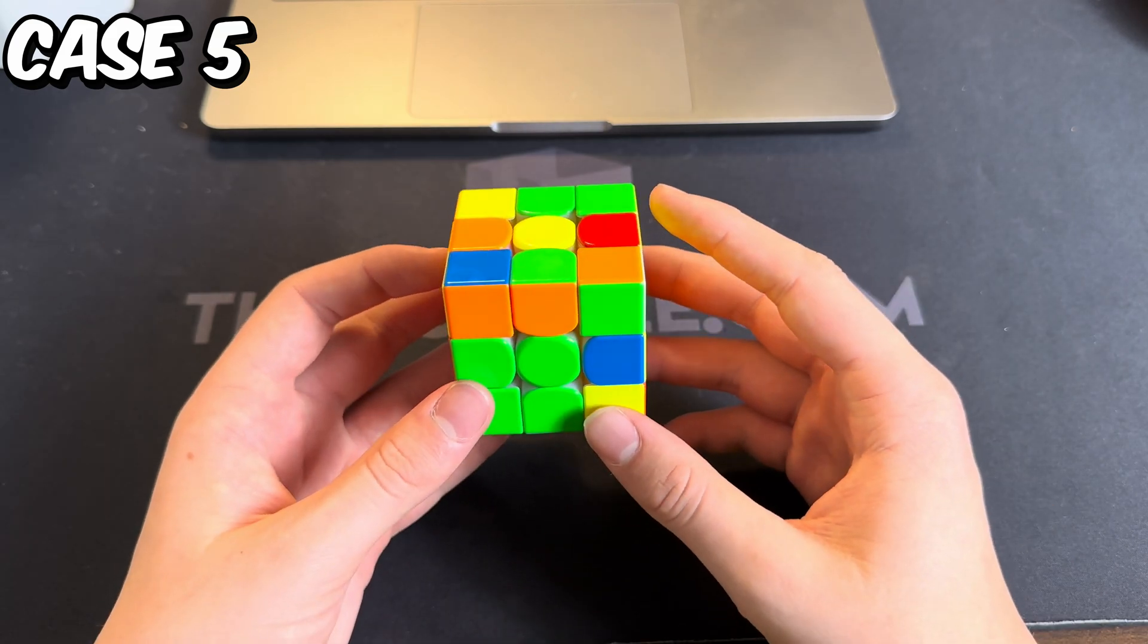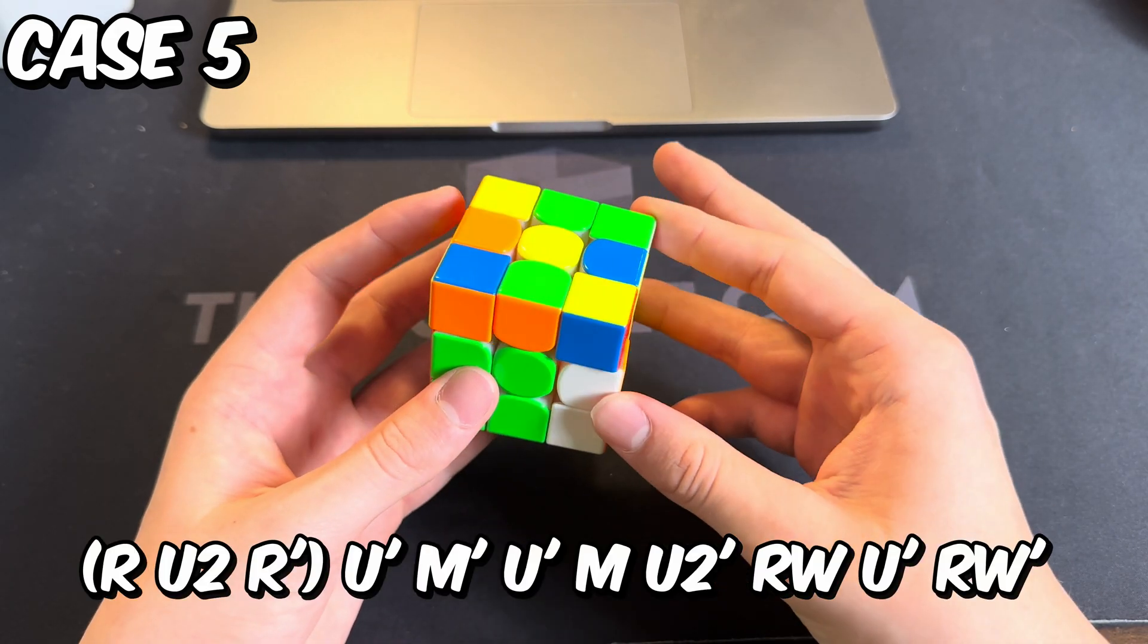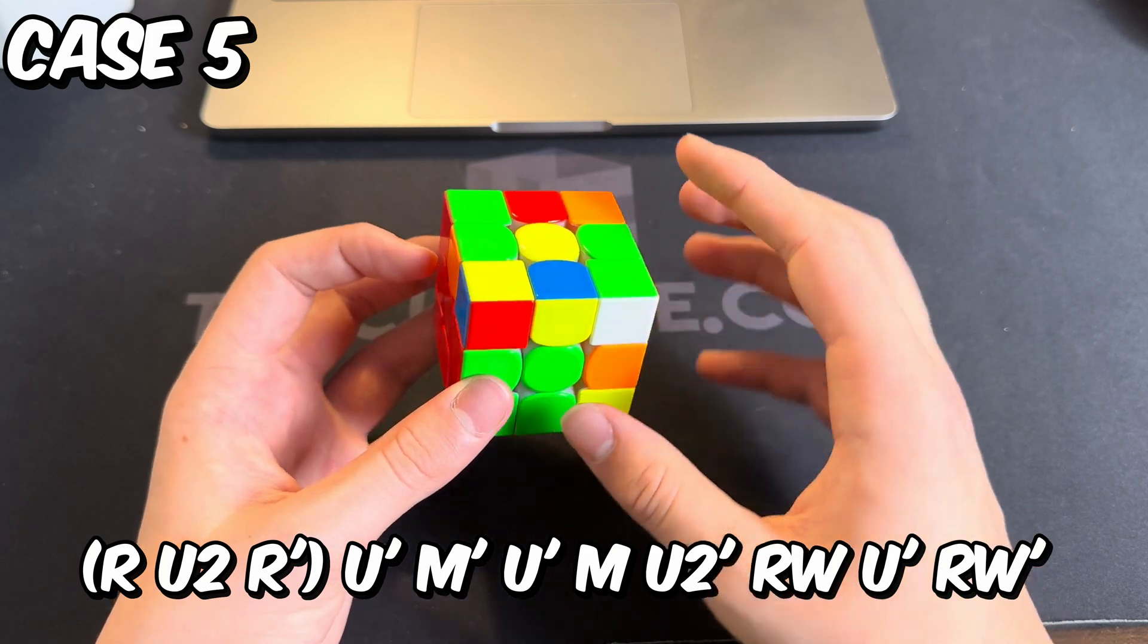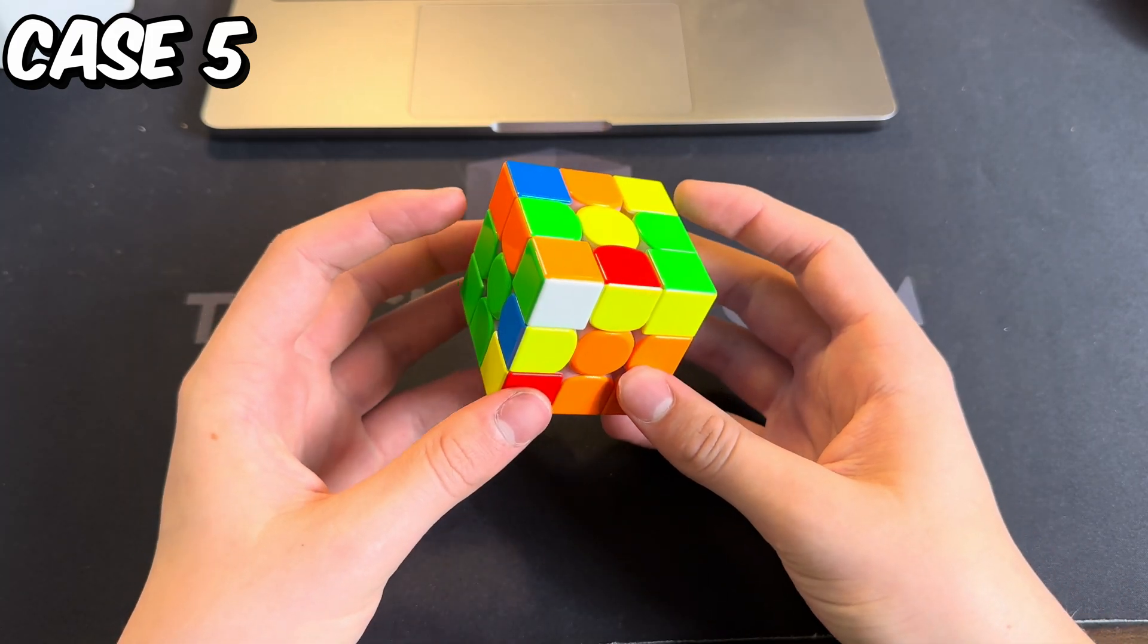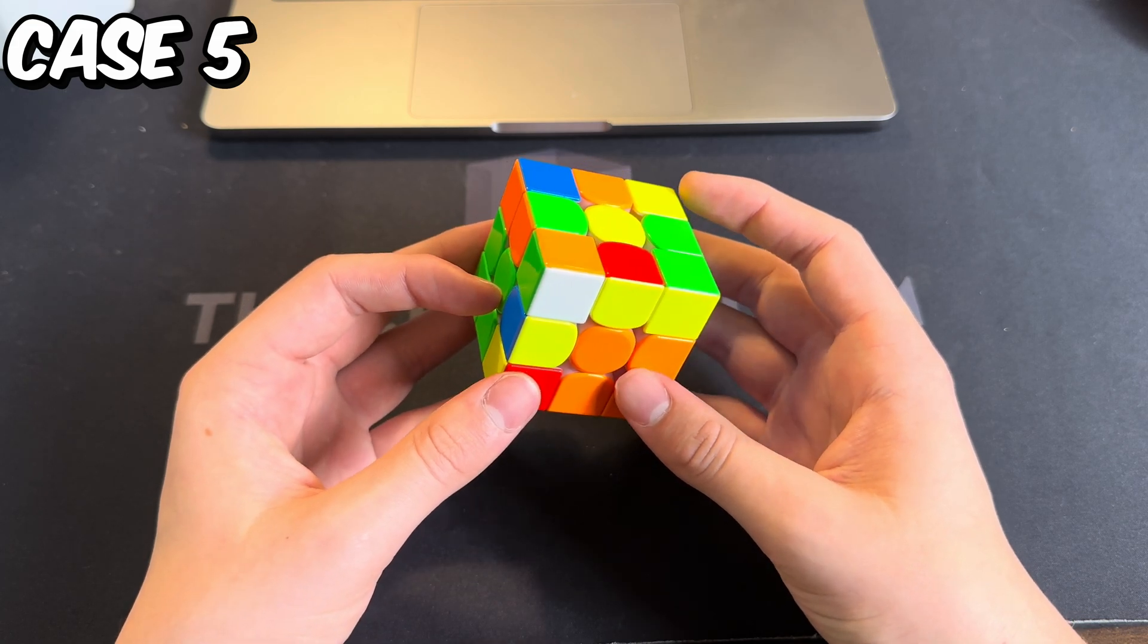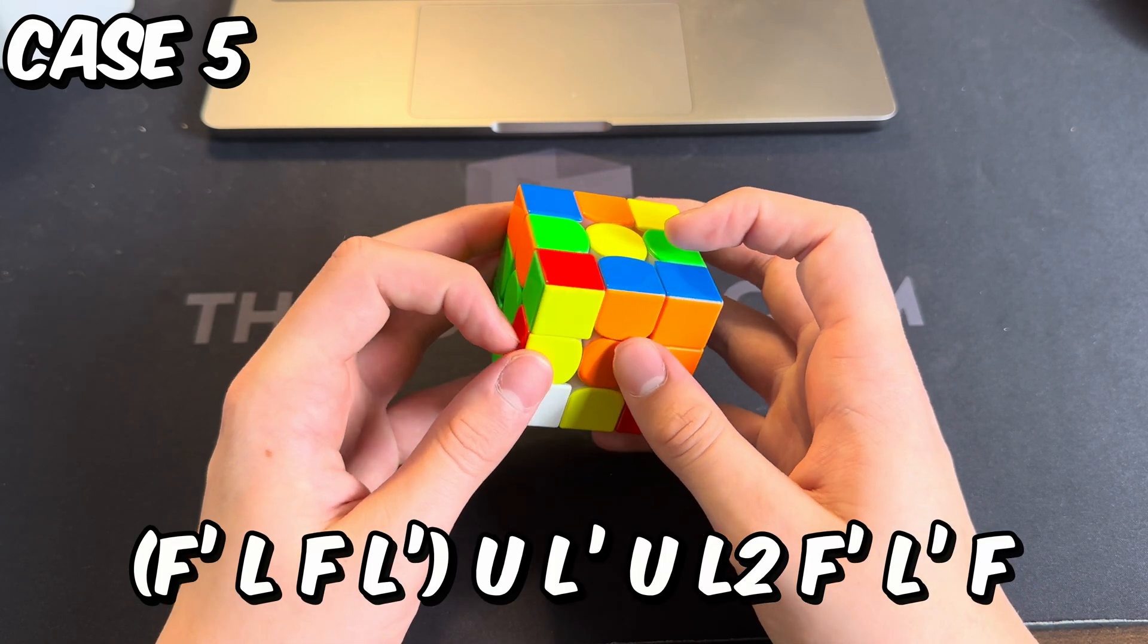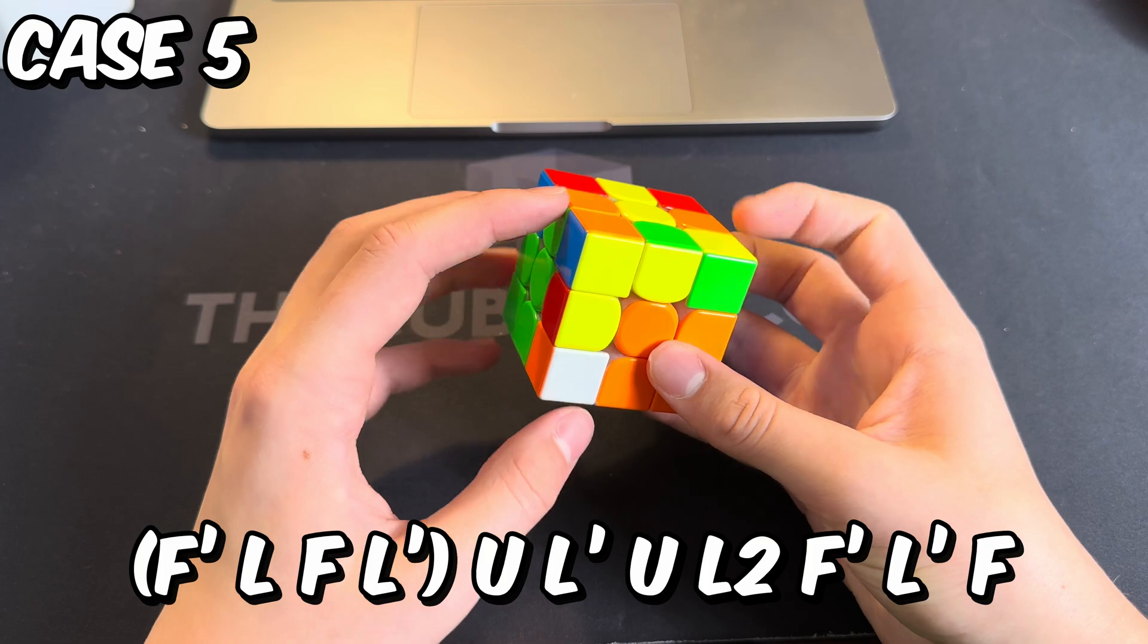Yeah, it's almost the exact same thing as the case from the last video, except you do R U2 R prime to start, and then you go into the ZBLS. Alternatively, if you have the pair on the other side, you can start with a hedge, pair up the pair, and sledgehammer it in.